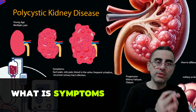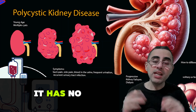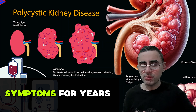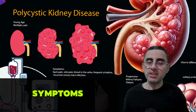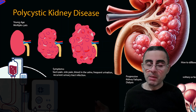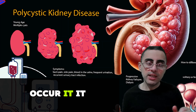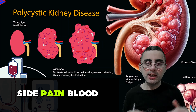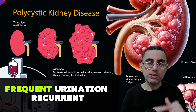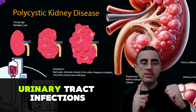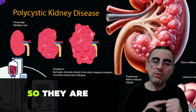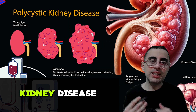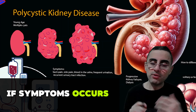Polycystic kidney disease has no symptoms at early stages — no symptoms for years. But when symptoms do occur, they include back pain, side pain, blood in the urine, frequent urination, and recurrent urinary tract infections.